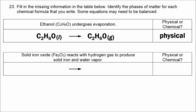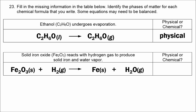The last equation: Fe2O3 solid reacts with hydrogen gas (H2, diatomic) to produce solid iron (Fe, not diatomic) and water vapor. Phases: solid, gas, solid, gas — it is a chemical change. Balance iron first by putting 2 in front of Fe on the right, then put 3 in front of water on the right so oxygen atoms balance, then put 3 in front of H2 on the left so there are 6 hydrogens on both sides.